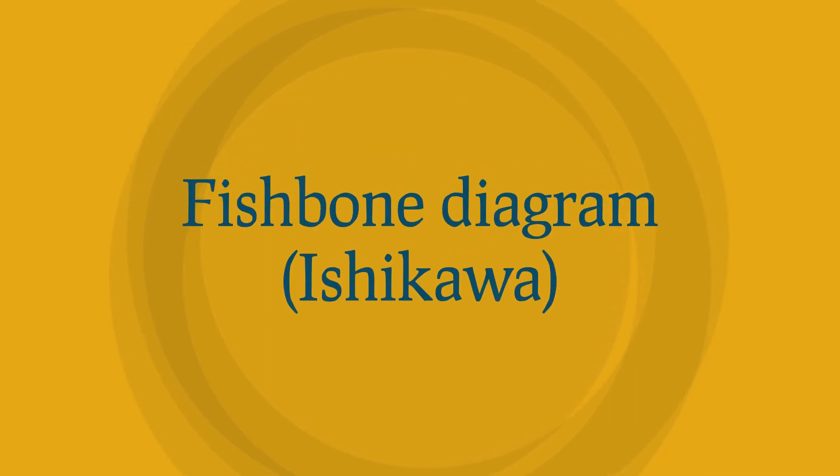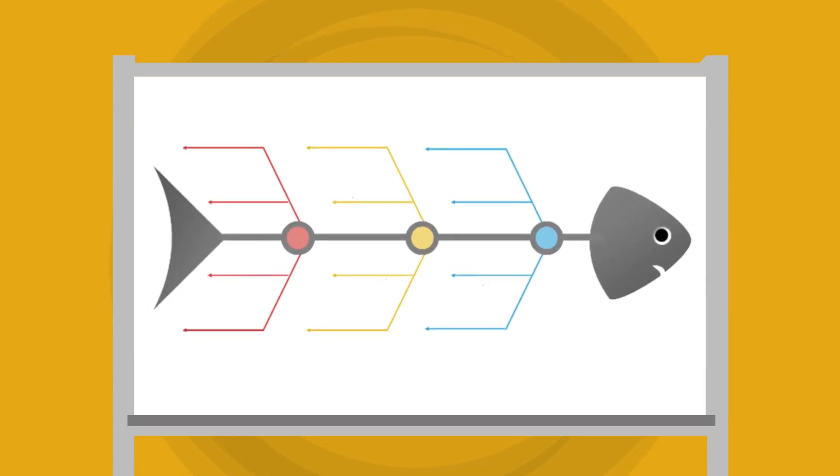Fishbone or Ishikawa Diagram. The Ishikawa Diagram, also known as the Fishbone Diagram, is a tool that is used for mapping the cause of problems.